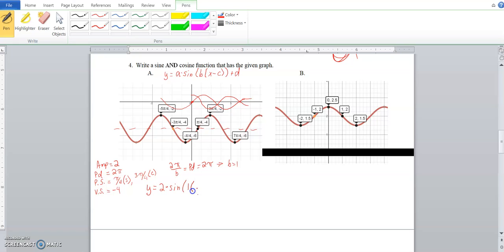So that's 1(x - c). C is the phase shift, so phase shift for sine was pi over 4, and our vertical shift was down 4. For cosine, a stays the same, b stays the same, it's our phase shift c that changes, then minus 4, and we can box this in.